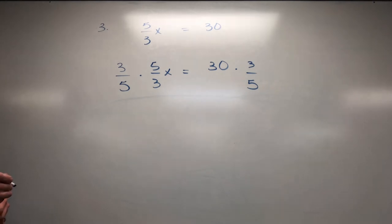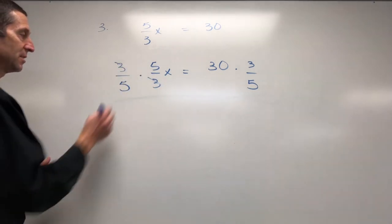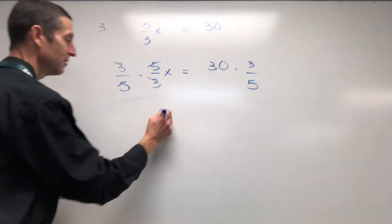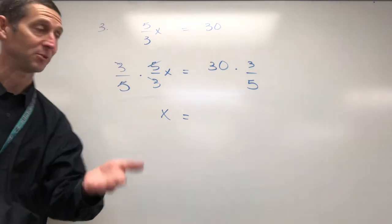Alright, let's go. So this 3 and that 3 cross out. This 5 and that 5 cross out. Right now, you're feeling really good. You're like, oh, that was a cool math trick. It all knocked out.